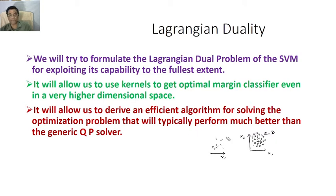then solving dual problems turns out to be more convenient than solving the primal problem. Also, it allows us to derive an efficient algorithm for solving the dual problem, typically which will be performance-wise much better than if you solve primal problem using generic quadratic problem solver. These are the reasons for which we need to solve the dual problem of support vector machine.